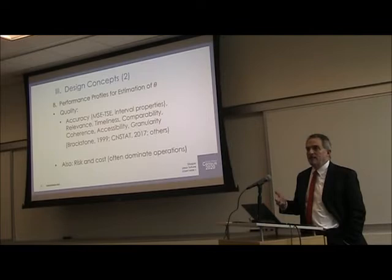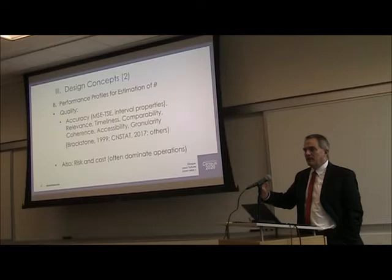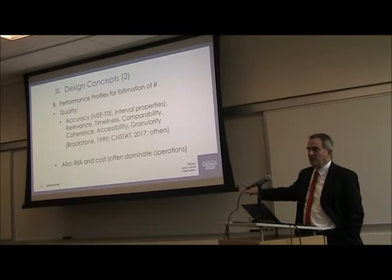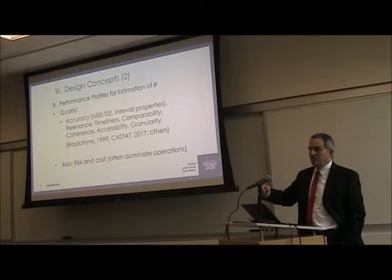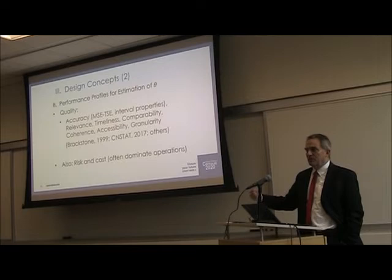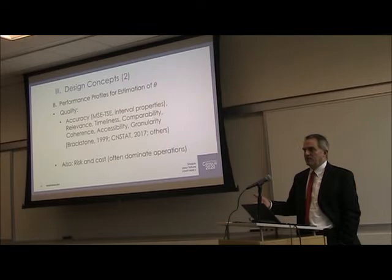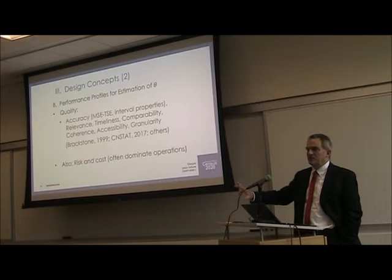My suggestion is that in some cases the best way to think about it is to talk about a predictive distribution as a way to try to anchor those other discussions. In addition, any large-scale statistical organization also spends a lot of time thinking about risk and cost. The expectations we see for transparency or reproducibility all fundamentally involve us thinking both about quality characteristics and also about risk and cost characteristics, and ways in which we can try to have some rigorous description of each of those.